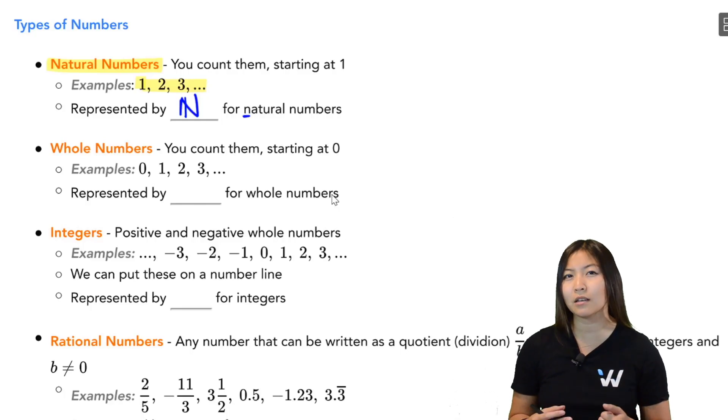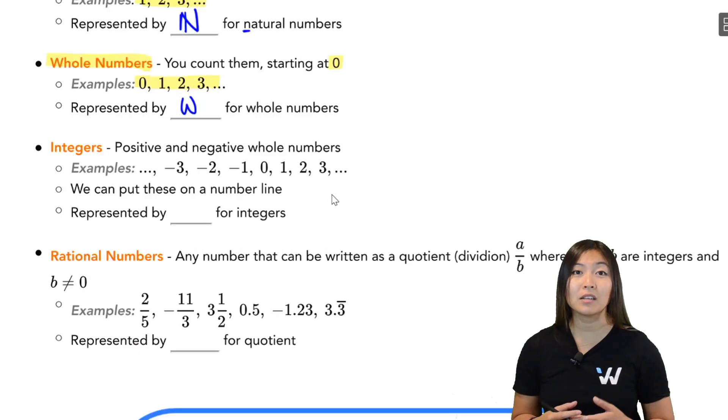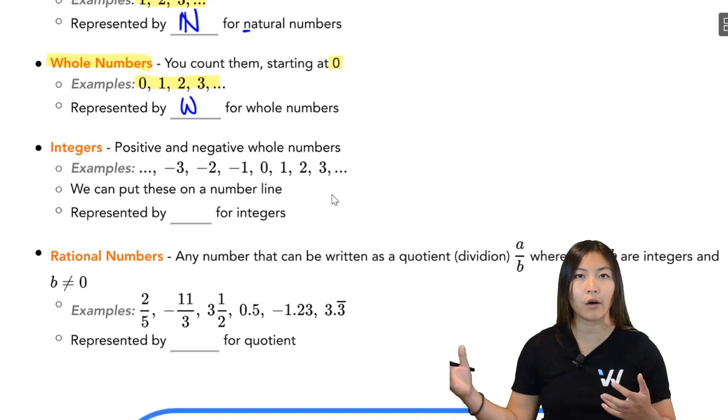What if your cookie jar is empty and you don't have any cookies in it? Well, now all of a sudden we have to introduce this really important number called the number zero. So if we take our natural numbers, 1, 2, 3, 4, 5 and so on, and we add on the zero, all of a sudden we have the set of numbers called whole numbers. And you probably guessed it, whole numbers because it starts with a W. The symbol that represents whole numbers is going to be W. Okay, now we have the ability to count cookies in a cookie jar, right? From zero all the way up to however many cookies you have. It goes on forever.